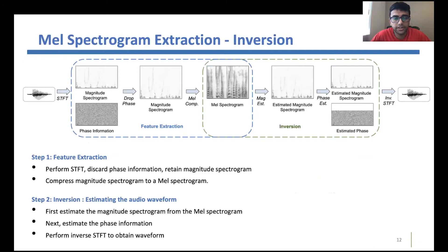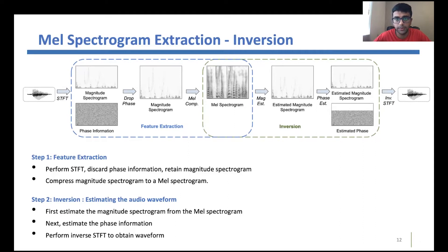The MEL spectrogram extraction and inversion pipeline works as follows: we apply a short-time Fourier transform to get the magnitude spectrogram and phase information, then discard the phase and compress the magnitude spectrogram to get the MEL spectrogram. We then follow the inverse of these lossy compression steps — multiplying by the inverse of the MEL transformation matrix to get the estimated magnitude spectrogram, using Griffin-Lim to estimate the phase, and then applying inverse STFT to reconstruct the waveform.